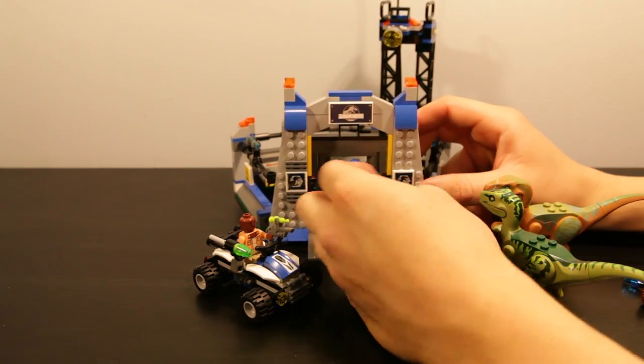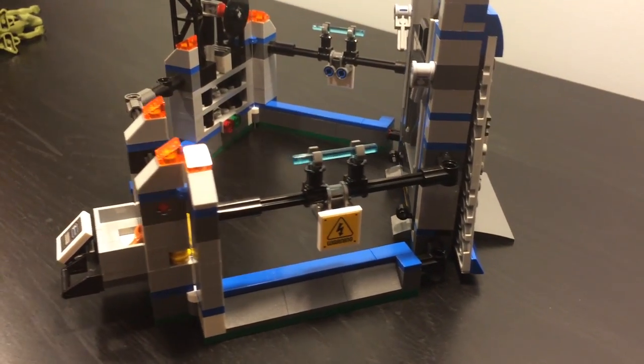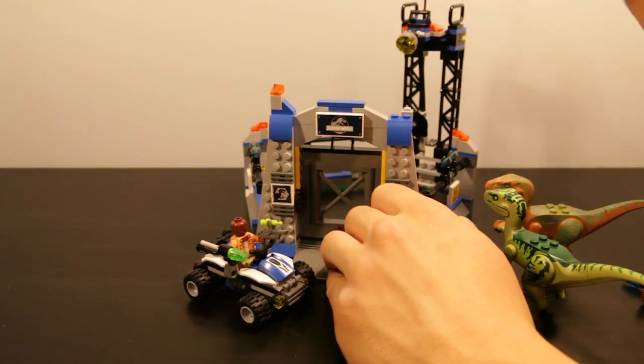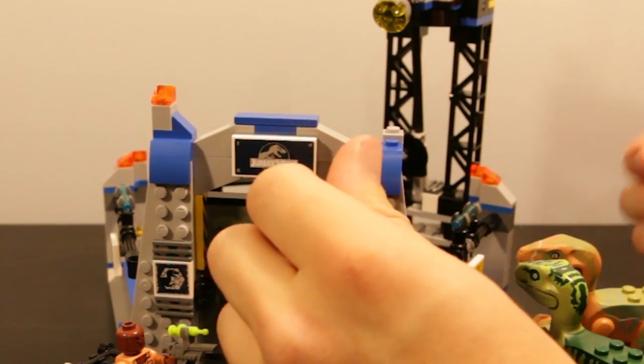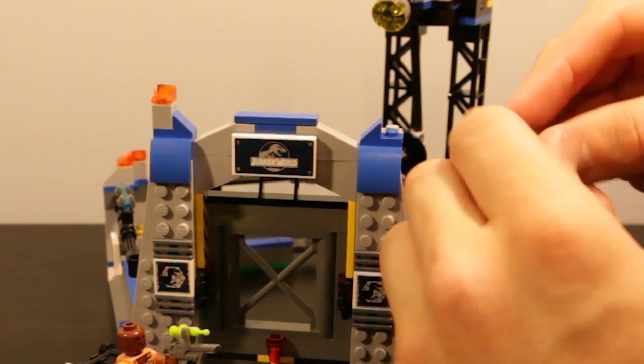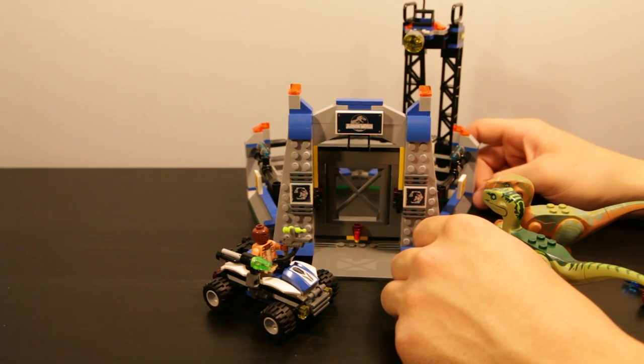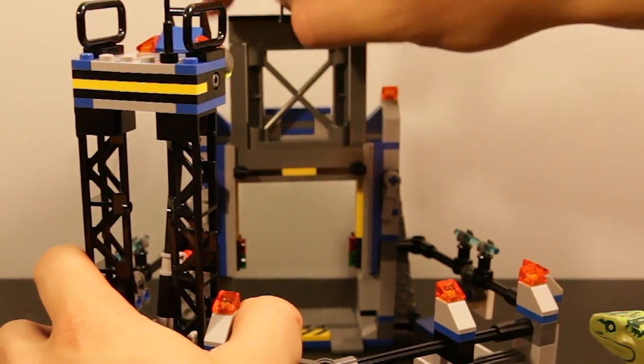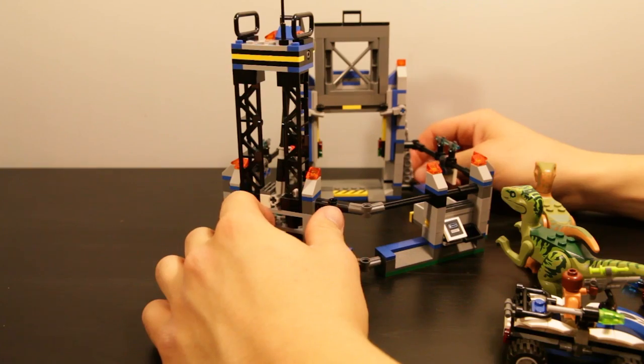Lego does a phenomenal job with the detailing of anything. When you're building this gate, you're gonna be adding so many like little intricate pieces. And you're just gonna be like oh my god. Here's another thing about the engineering. It's fantastic. Say for example you got all these pieces and you're like okay well how am I gonna do that. And then the instructions say put that guy on. And you sit back and you're like wow that's brilliant. People working at Lego blow my mind.